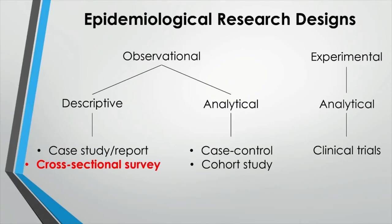Cross-sectional design is used to describe the magnitude of a condition or a disease. Many times, data for this study design are collected using surveys or questionnaires. Like case report, survey is also categorized as observational and descriptive research design. However, the study unit is targeting a much bigger population than case studies. Survey is a good way to collect large amounts of public health data quickly.